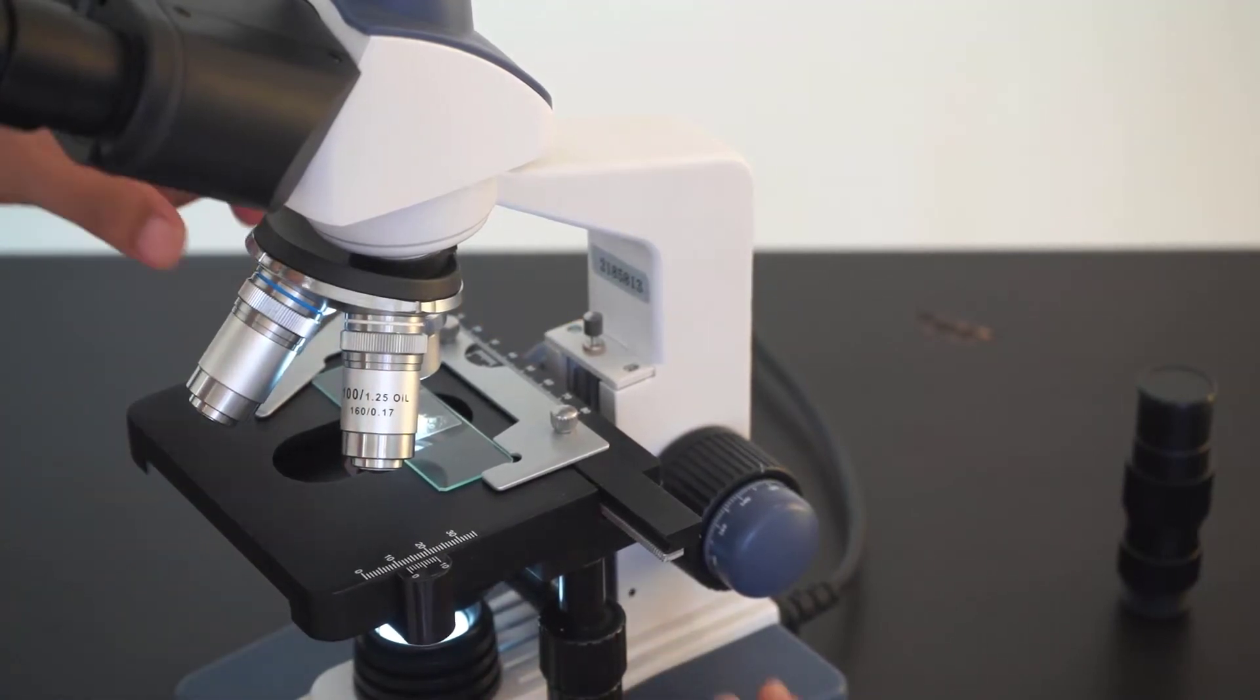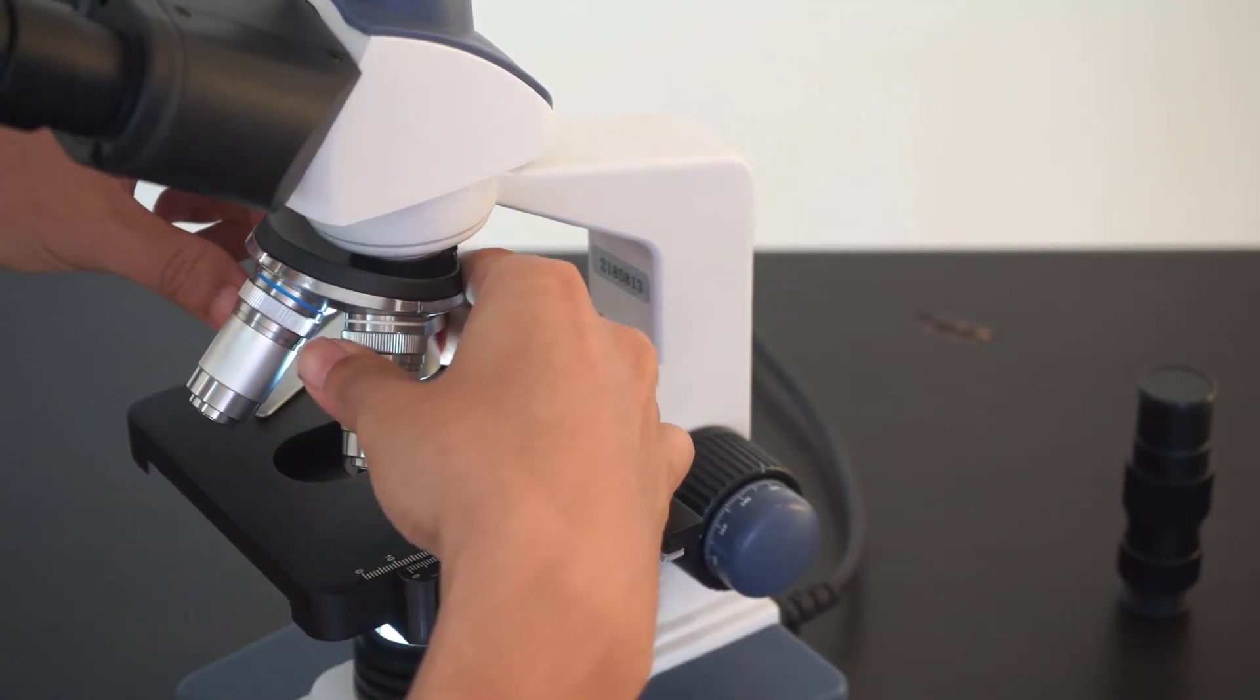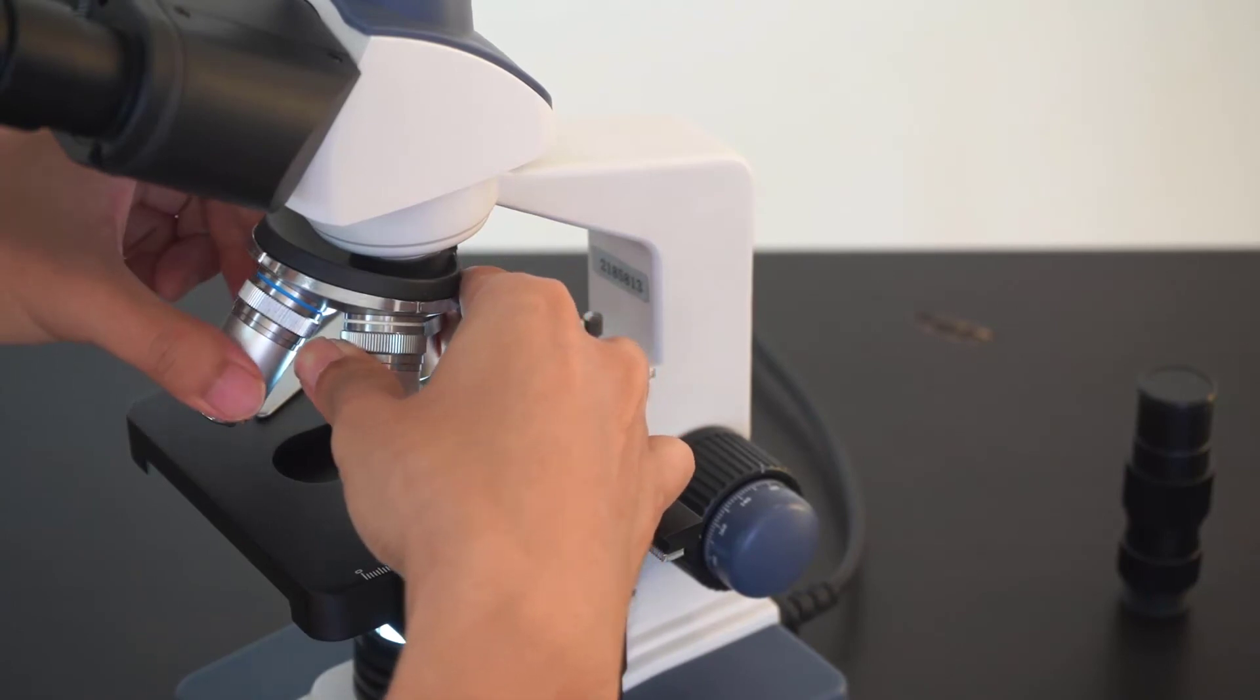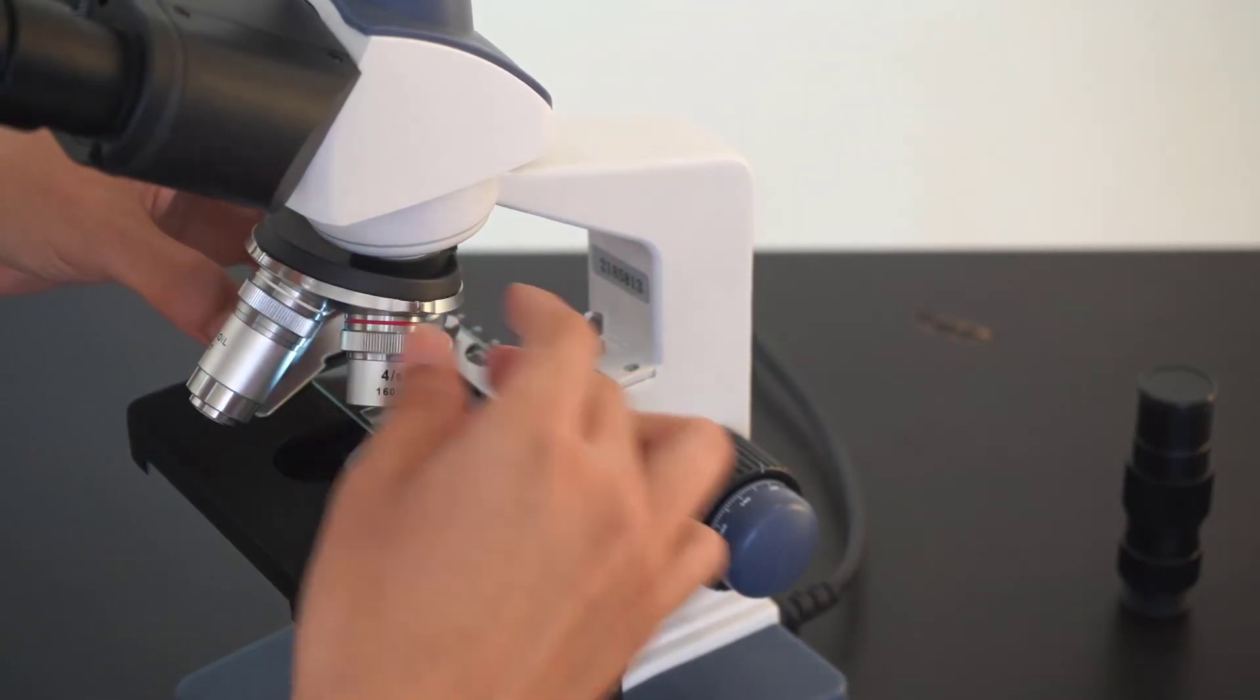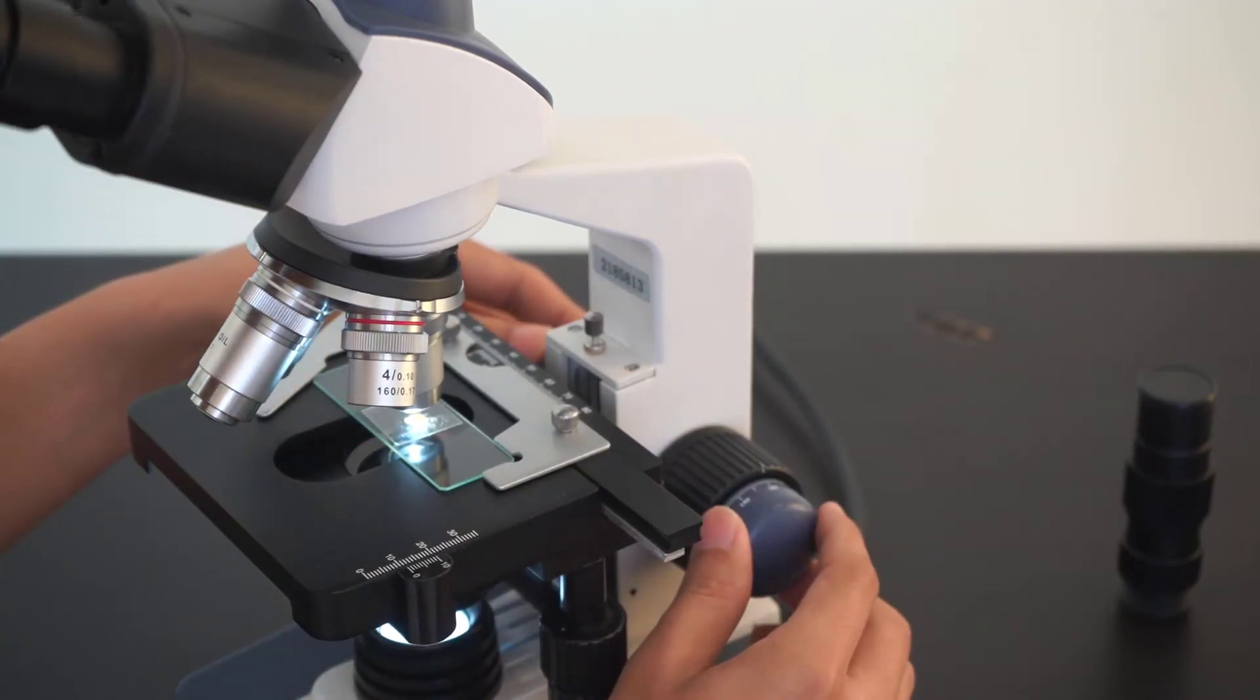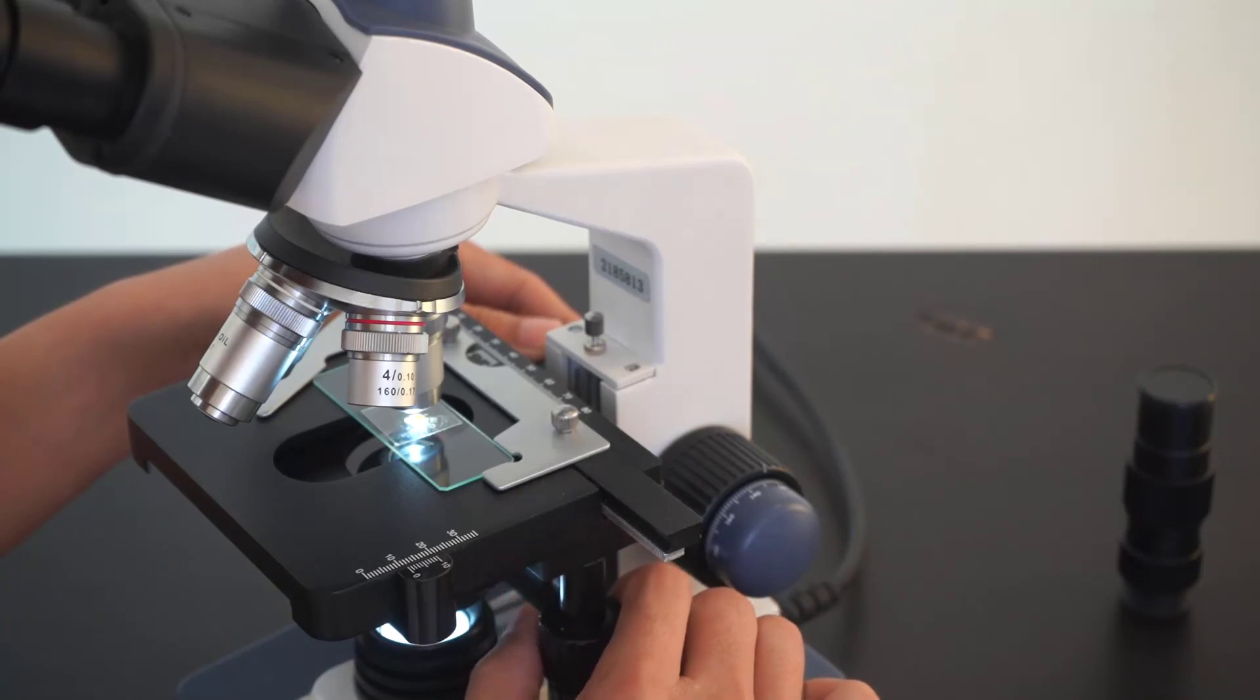Once you have got your focusing right, you can just adjust your objectives to a higher magnification position, and you just focus a bit with the precision focusing ring and you can get the image that you want on the eyepiece.